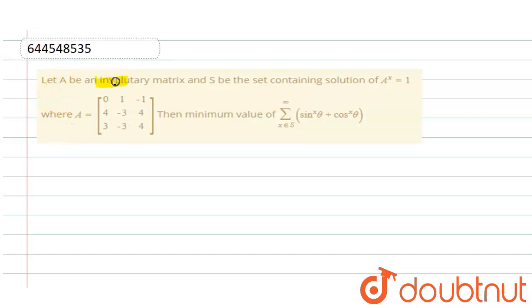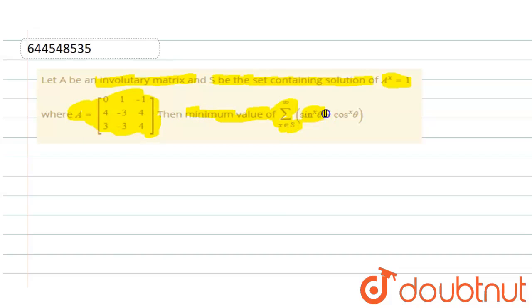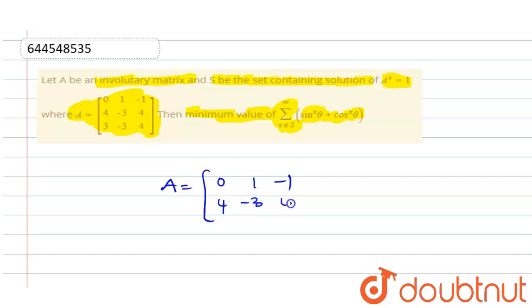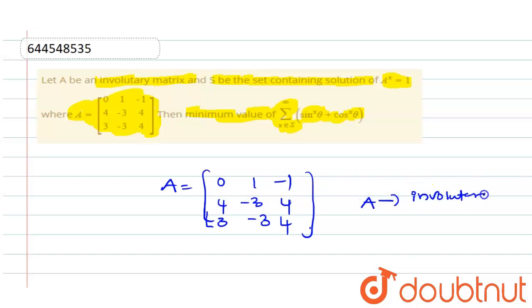The question is: given that A is an involutory matrix, and S_B is the set containing solutions of A^x = I, where the matrix A is given as [[0, 1, -1], [4, -3, 4], [3, -3, 4]], find the minimum value of the summation sin^x(θ) + cos^x(θ).